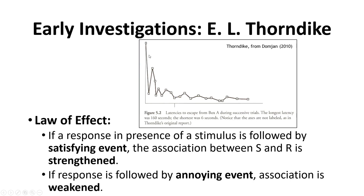What Thorndike actually observed was a gradual change in behavior over time. This graph shows standard results: time to escape on the y-axis, successive trials on the x-axis. The first time, it took a very long time to escape; sometimes they didn't even figure it out. Then they got out much quicker, then a little longer, then faster again — bouncing around with a general downward trend. Toward the end, if left in the same box doing the same trials, they could escape almost immediately every time once they'd learned the trick.